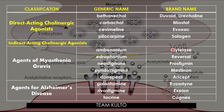Under indirect acting cholinergic agonists, there are two categories: drugs for myasthenia gravis and drugs for Alzheimer's disease. For myasthenia gravis: ambenonium, edrophonium, neostigmine, pyridostigmine — brand names Mytelase, Reversol, Prostigmin, Mestinon, and Aricept. For Alzheimer's disease: galantamine, rivastigmine, and tacrine — brand names Razadyne, Exelon, and Cognex.